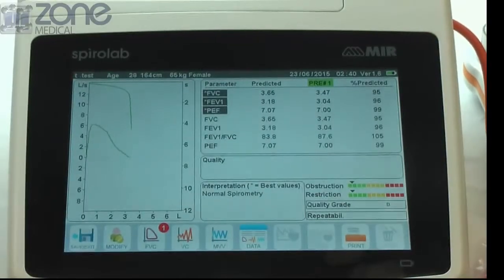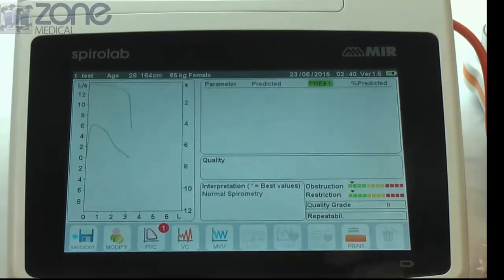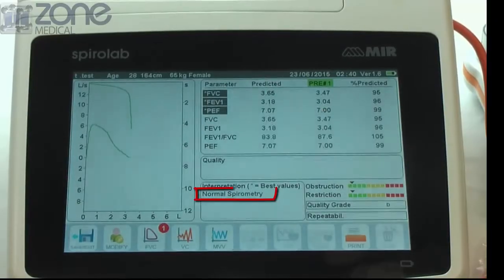You can also view the results by pressing the data tab on the bottom of the page. You will see normal spirometry written on the results if it was an accurate test.